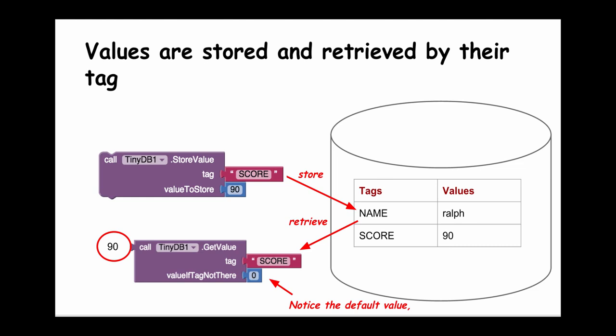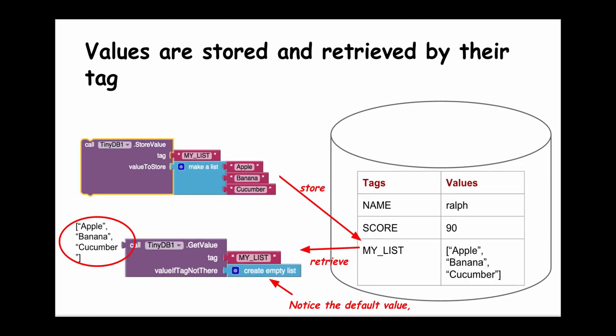One final example. Suppose we want to store a whole list, such as we're going to do in our slideshow app. Well, I need to give it a tag. In this case, the tag is MY_LIST. App Inventor will take the entire list and store it in a form that looks something like this in the database.